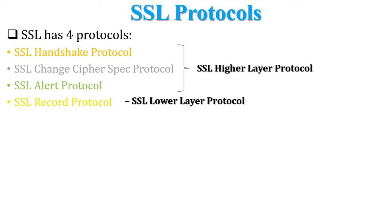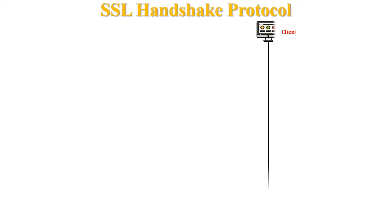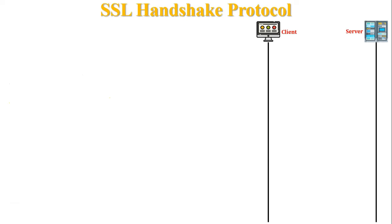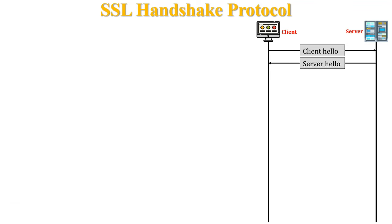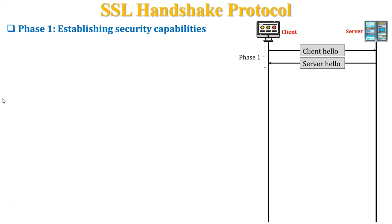Let's discuss all protocols in detail. For the SSL Handshake Protocol: there is one client who wants to communicate with the server. The client sends a client hello request to the server. When the server receives the client hello request, the server sends a server hello message back to the client. This is known as Phase 1 in the SSL Handshake Protocol, which represents establishing security capabilities.